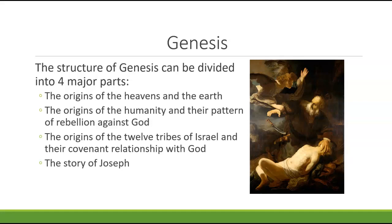The last major part — a big chunk of the book of Genesis — has to do with the story of Joseph. This story explains the people coming into Egypt, this foreign power in which they are going to be enslaved. While they are enslaved, God is still at work. It may seem like God has abandoned them or forgotten about their problems, but he hasn't. He is still there, doing things, and will eventually bring them out of captivity.